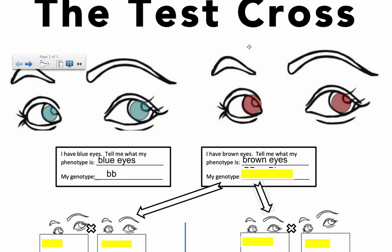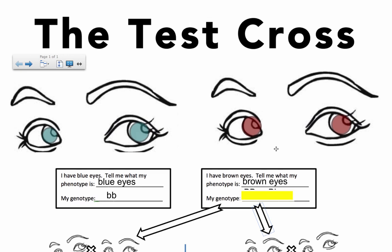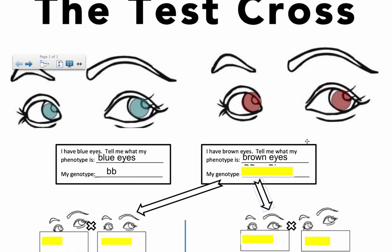That's where the test cross comes into play, because for blue eyes it's easy to identify — I know I have to have both recessive alleles. But when I have brown eyes, unless I know some information about my parents or my kids, it's harder to tell. The test cross helps me figure out exactly what type of brown-eyed person I am, because I could be big B, big B, or I could be big B, little b. So how do I know?